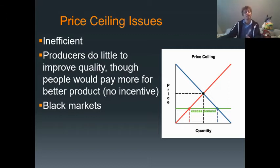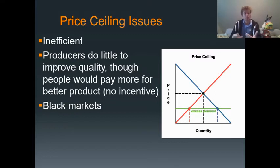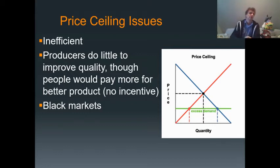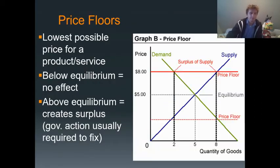One of the best examples is rent control in major cities. Rent control is great for consumers in many ways, but landlords have no reason to upgrade apartments because they can't charge any more for them. Price ceilings also create black markets for certain goods — since there are shortages, people who get their hands on the product can sell it at a higher price on the black market.